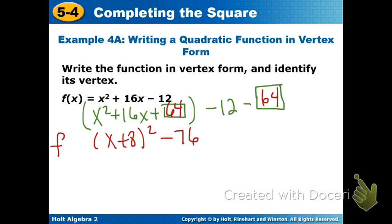What does it look like as a binomial? X plus 8 squared. So this one you happen to end up with plus. Now come over here. Now you have the negative 12 and the negative 64. Combine those. What do you get? Negative 76. So that gives us our function in vertex form.